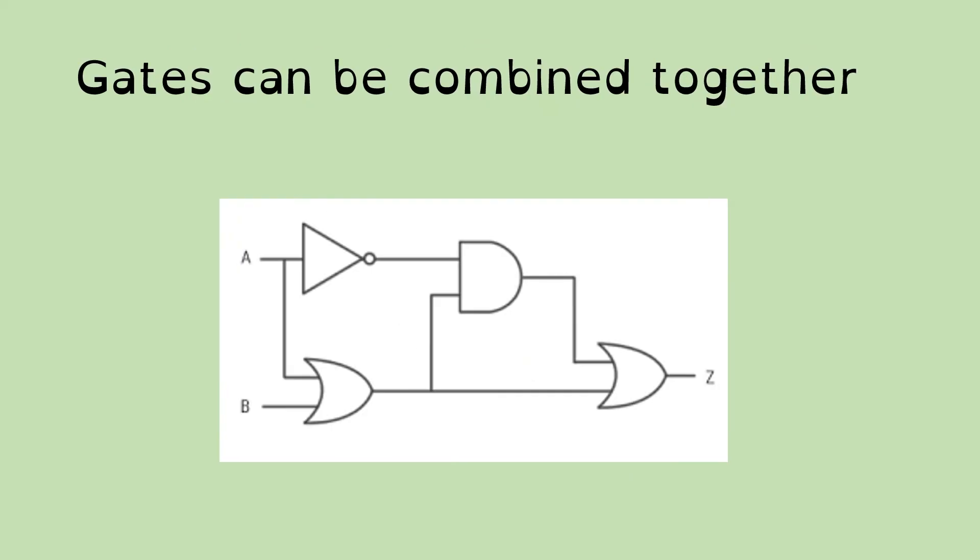Gates can be combined together. So here's a symbol, a diagram of a more complex circuit, which involves four different gates combined together. And the ones on the left produce outputs that then become inputs from the ones that are further to the right.